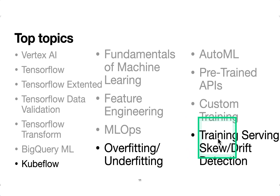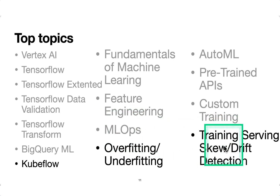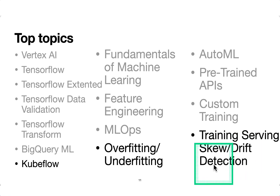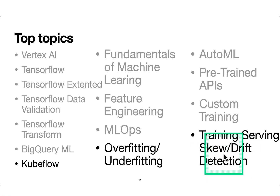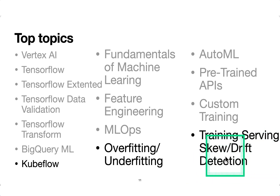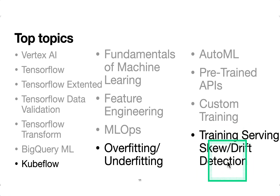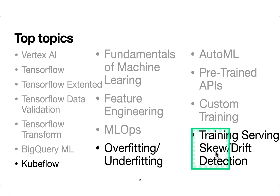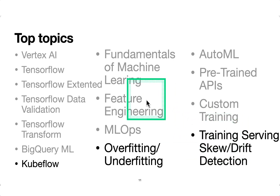The exam also focuses a lot on training-serving skew, which ties back to MLOps. This includes how to detect skew and how to detect drift in your models. Drift detection means your training model was performing well when deployed, but over time the quality has gone down — the model or data has changed. That is detected through model monitoring, and all those techniques and strategies will come into picture.